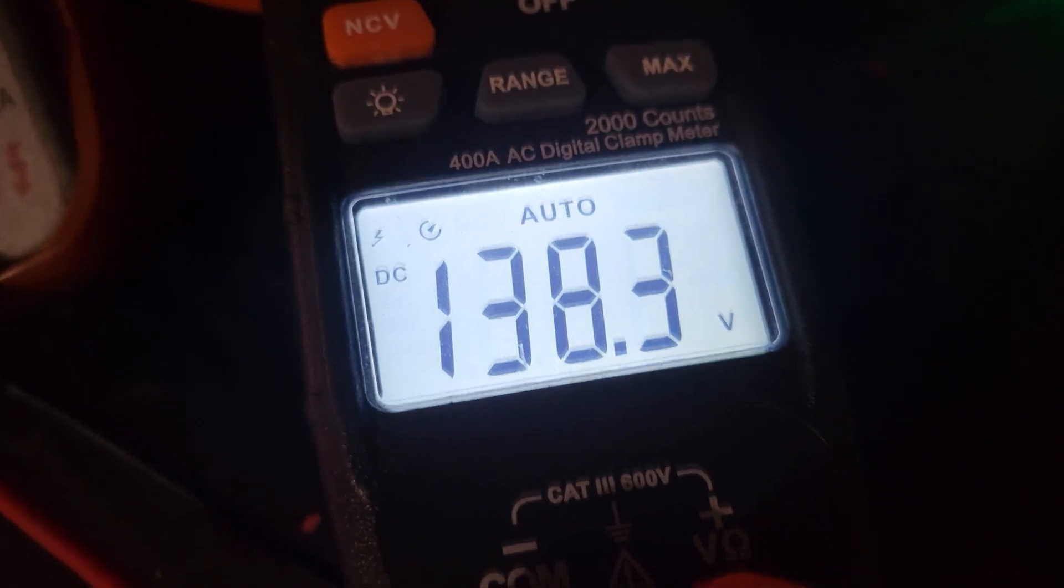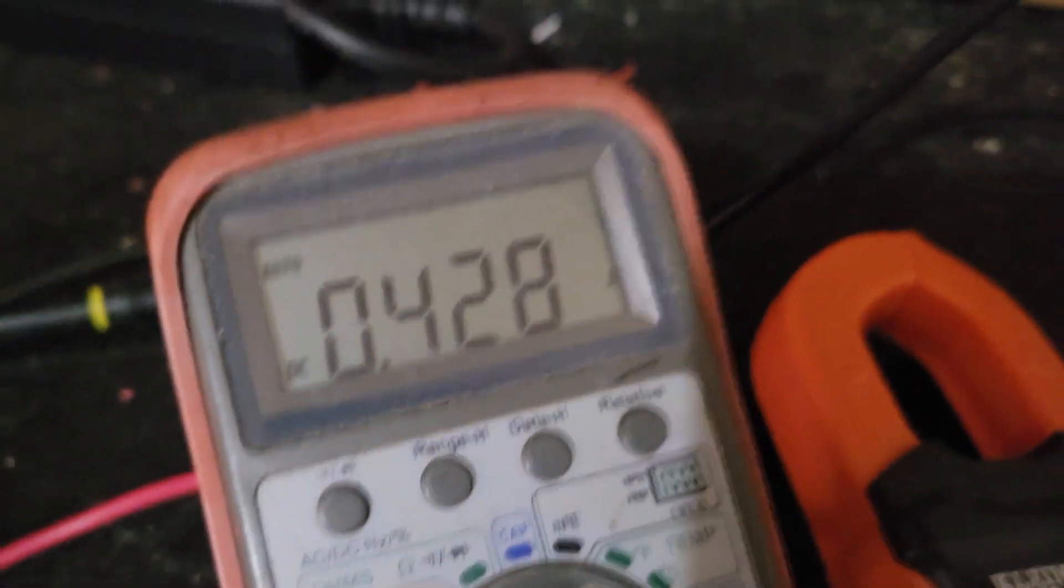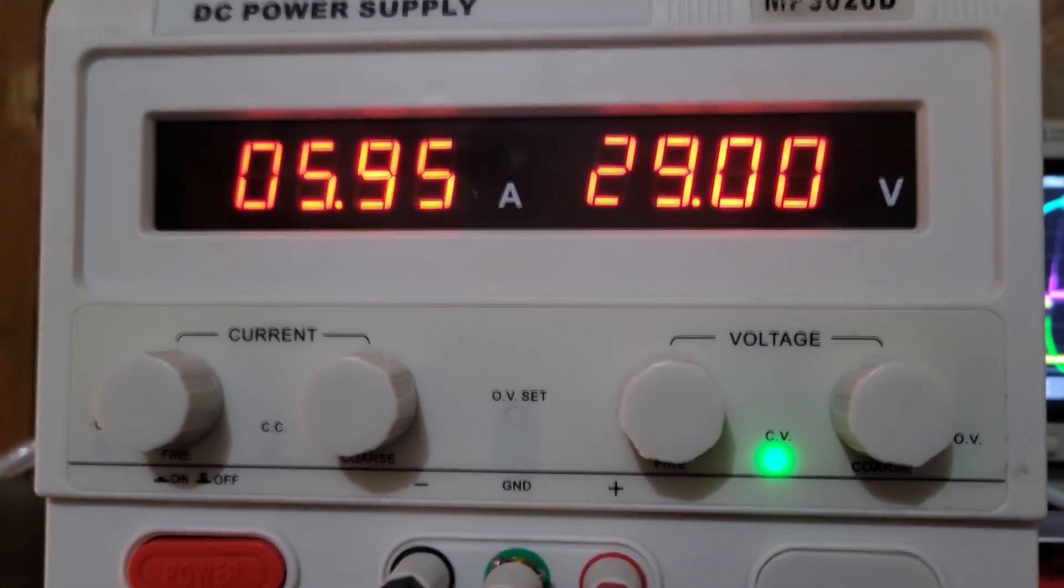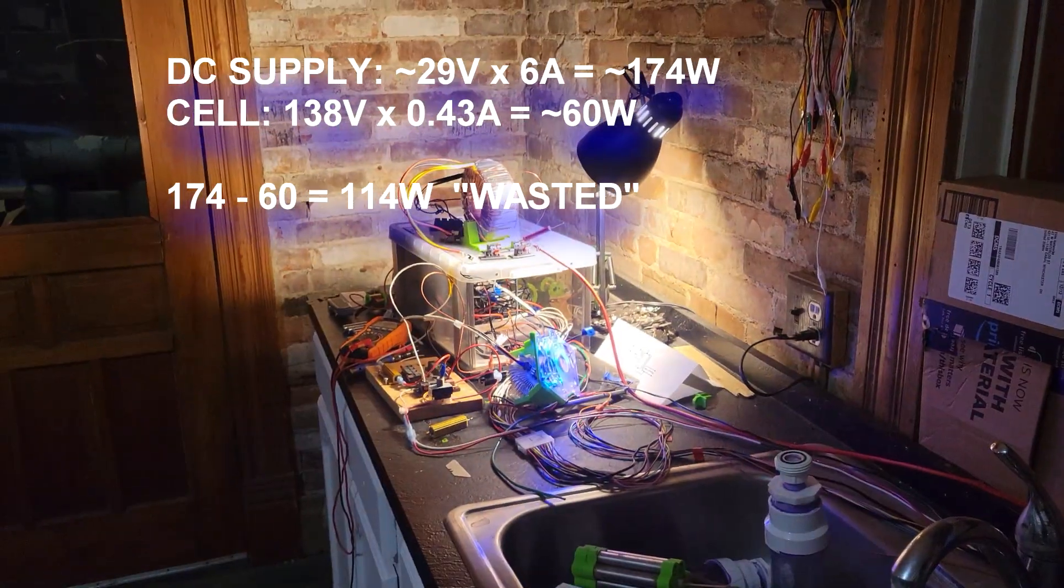I have 138 volts across the cell, 430 milliamps being consumed. This is just the cell, but my actual circuit and transformer is consuming 180 watts, all of that mess over there.